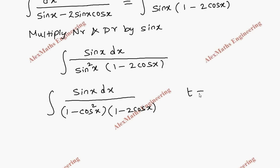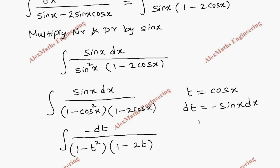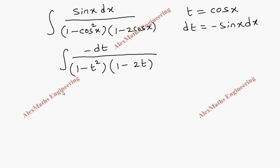Now we can notice that when we take the substitution t equals cos x, dt will become minus sin x dx. So the numerator is replaced with minus dt and the denominator becomes (1 minus t squared) into (1 minus 2t).